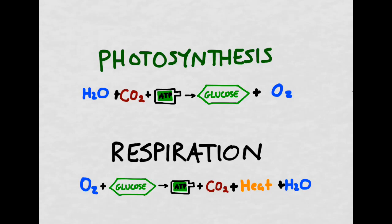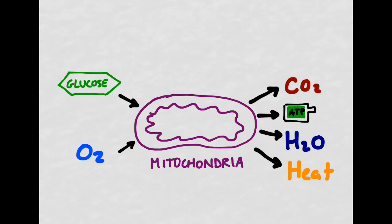Quick review — this should be familiar. In photosynthesis we are going in one direction, and in respiration we're going almost exactly in the opposite direction. So instead of going from ATP to glucose, in respiration we're actually going from glucose to ATP. Most of respiration happens in the mitochondria, although not all.